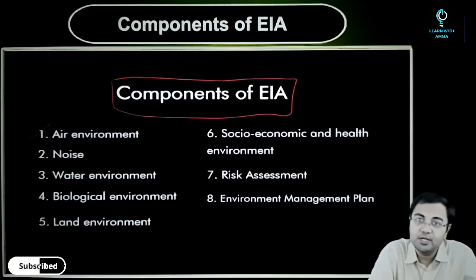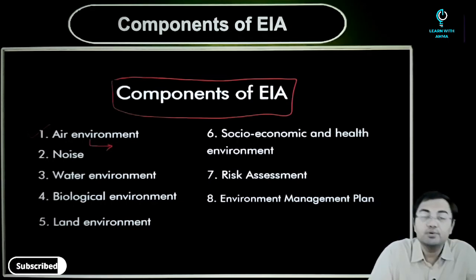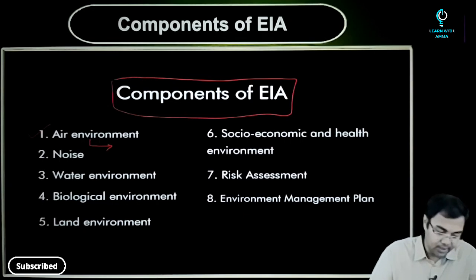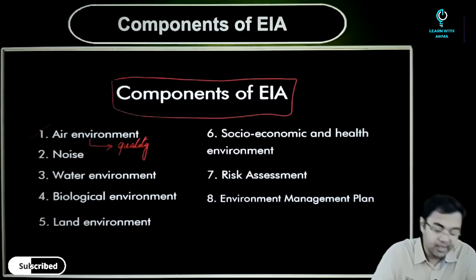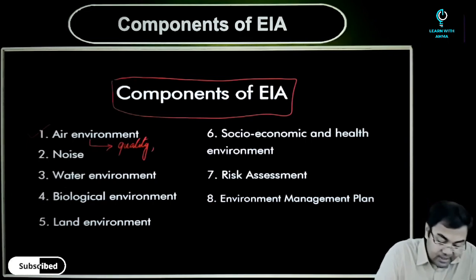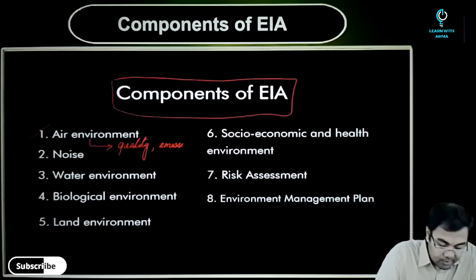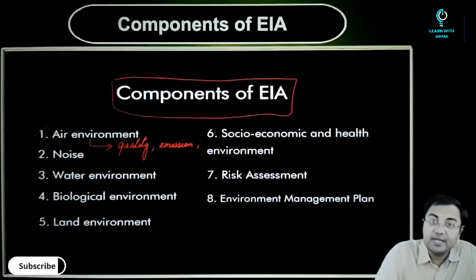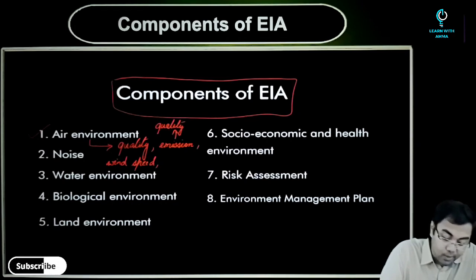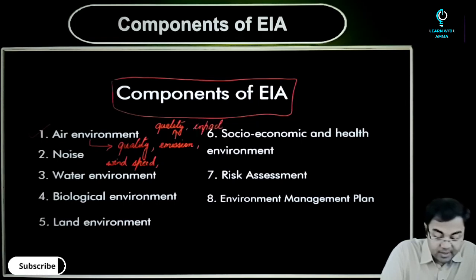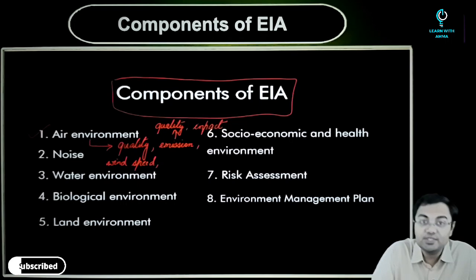If we talk about the air environment, we are going to look at various components with respect to air. For example, you can talk about the quality of ambient air, the amount of emissions that will happen from the given project, and then the meteorological data — for example, wind speed. When it comes to emission, there are two aspects: what is the quality of emission happening, and what is the impact of this emission? So all these are the various components that need to be looked after.